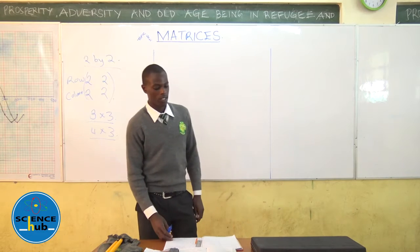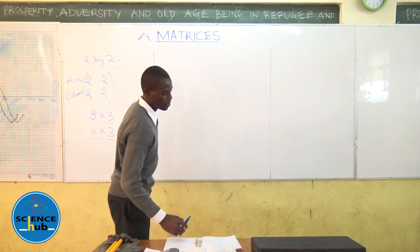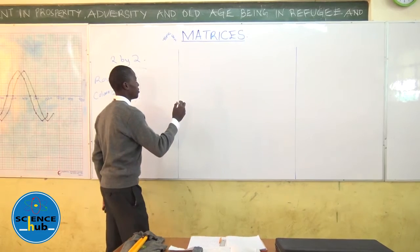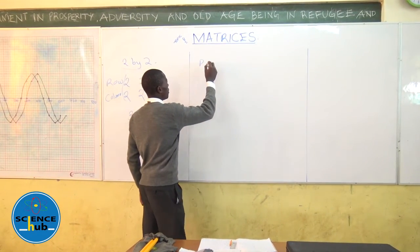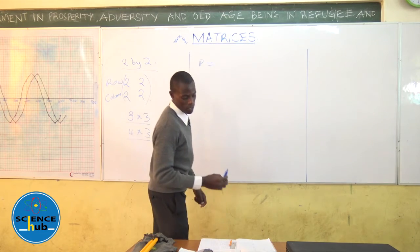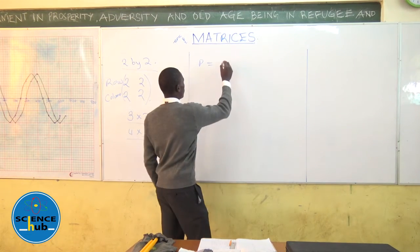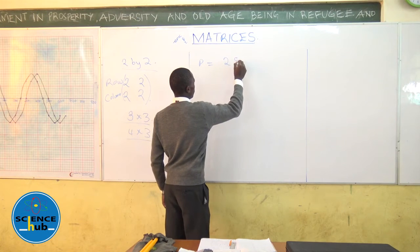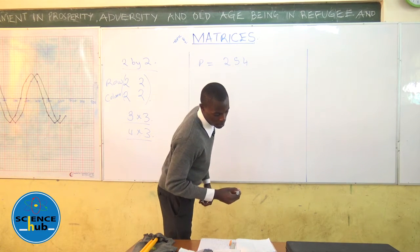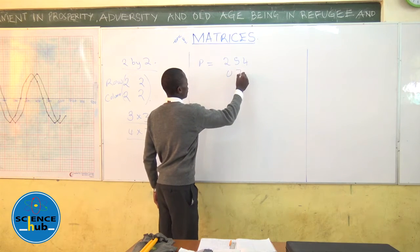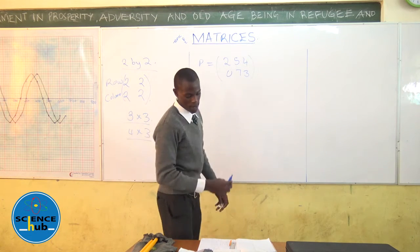Addition and subtraction of matrices. In addition of matrices, we take an example of matrix P, given that matrix P is equal to 2, 5, 4 and 0, 7, 3.